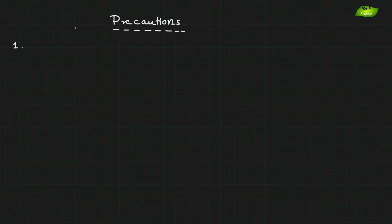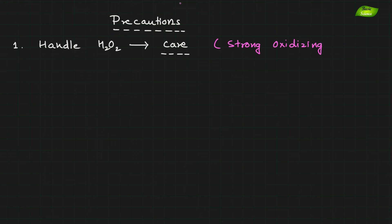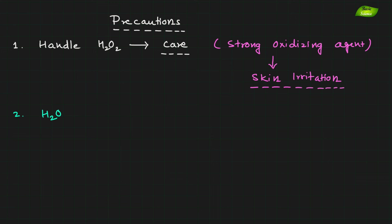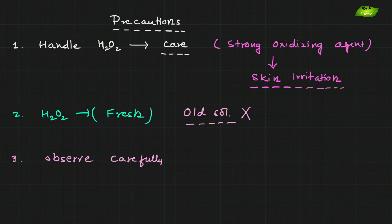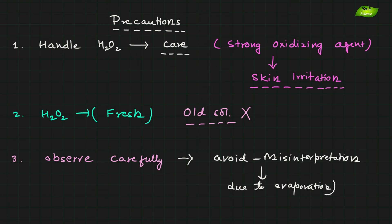Moving to the last part: precautions. You need to be careful while handling H2O2 solution because it is a highly strong oxidizing agent and can cause skin irritation. Second, H2O2 needs to be freshly prepared. You need a fresh solution to avoid false negative results. Third, observe the reaction very carefully and avoid false positive results due to evaporation. Using controls is a good idea to differentiate what is actually a positive reaction from a negative one.